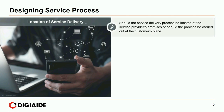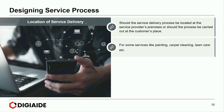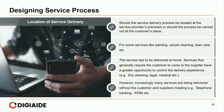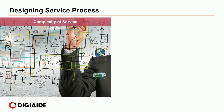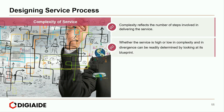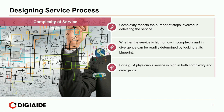Next, location of service delivery — should the process be located at the service provider's premises or carried out at the customer's place? For some services like painting, carpet cleaning and lawn care, the service has to be delivered at home. Services that generally require the customer to come to the supplier have a greater opportunity to control the delivery experience — example, dry cleaning, legal, medical. However, increasingly many services are being delivered without the customer and supplier meeting, for example through telephone banking and ATMs. And finally, complexity of service — complexity reflects the number of steps involved in delivering the service. Whether the service is high or low in complexity and divergence can be determined by looking at its blueprint. For example, a physician's service is high in both complexity and divergence, whereas hotel services are high in complexity but low in divergence.